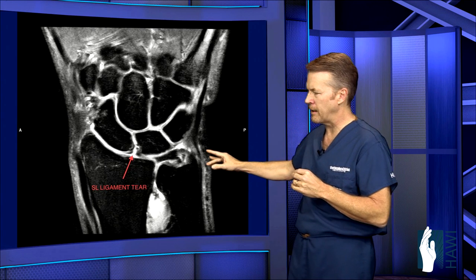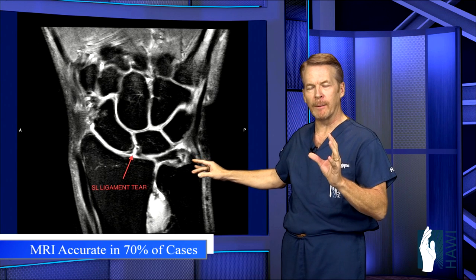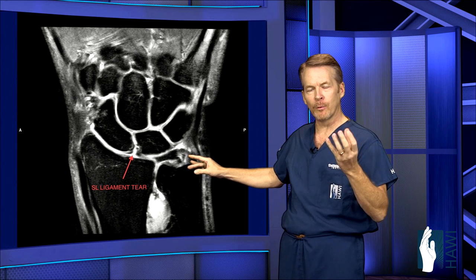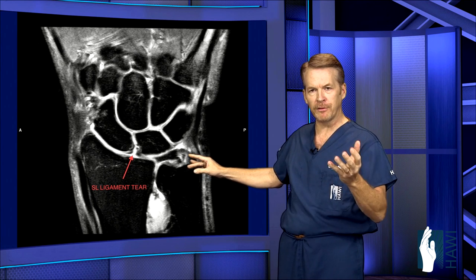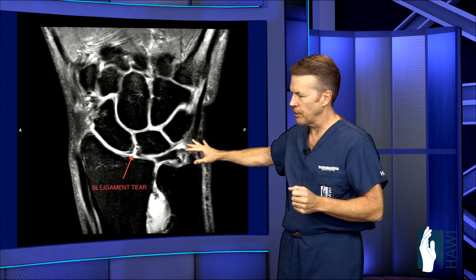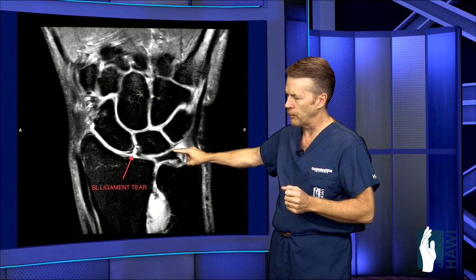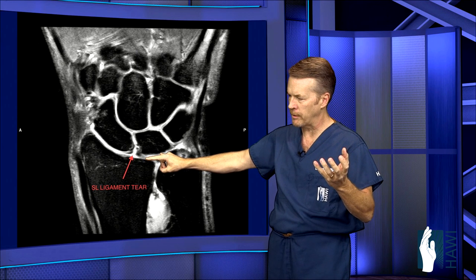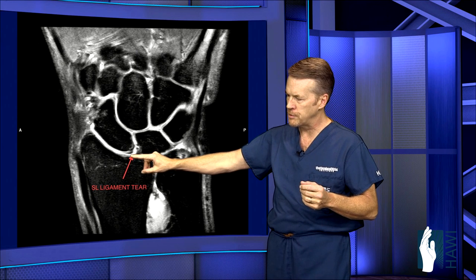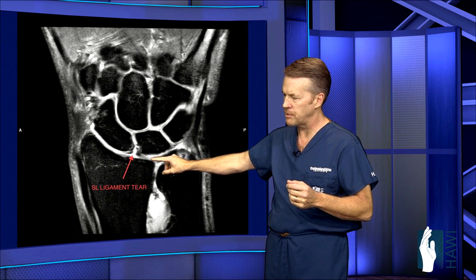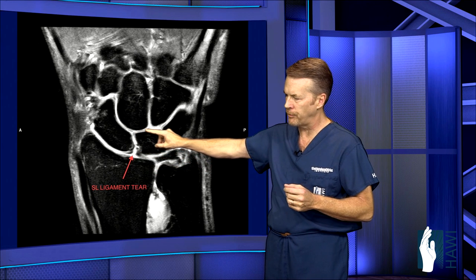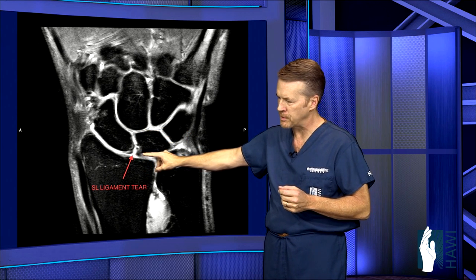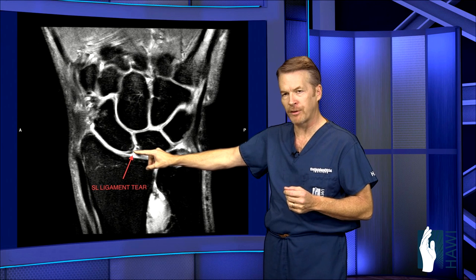Let's look at an MRI now. This is called an MR arthrogram, and it's the gold standard for diagnosing ligament tears in the wrist before performing invasive arthroscopic surgery. This shows the white fluid that's injected into the radiocarpal joint, which is the arthrogram component of the test. This fluid should stay right along this joint — it should not enter between these bones as you see it doing here. You can see this arrow is pointing to a disruption of this black line, which is the scapholunate ligament.